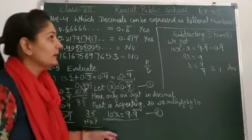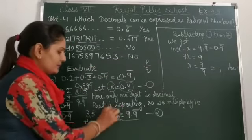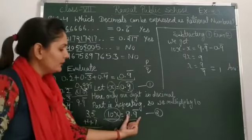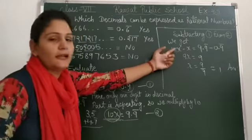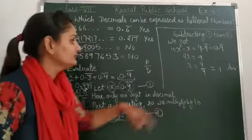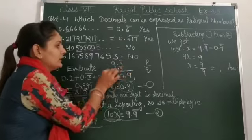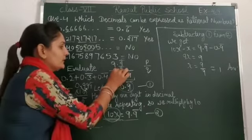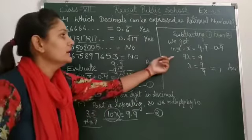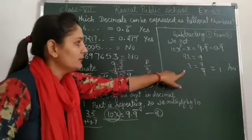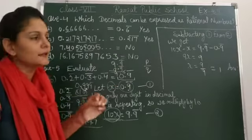So 10x minus x, that is 9x. 9.9 bar minus 0.9 bar, see 9 bar minus 9 bar becomes 0. Point, 9 minus 0 is 9. So this becomes 9.0, that is 9. 9x equal to 9. When 9 is on this side, it will go to other side as divide. So x equal to 9 upon 9, that is 1.